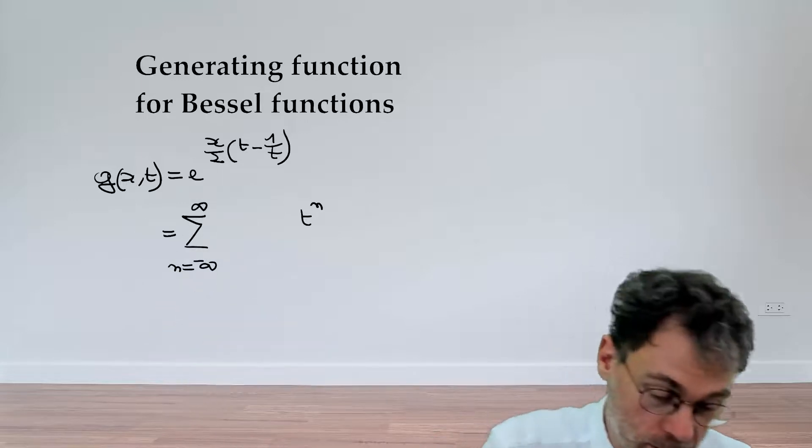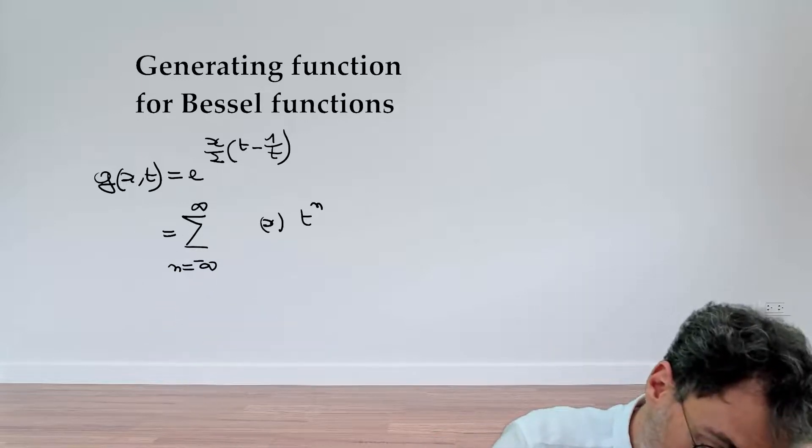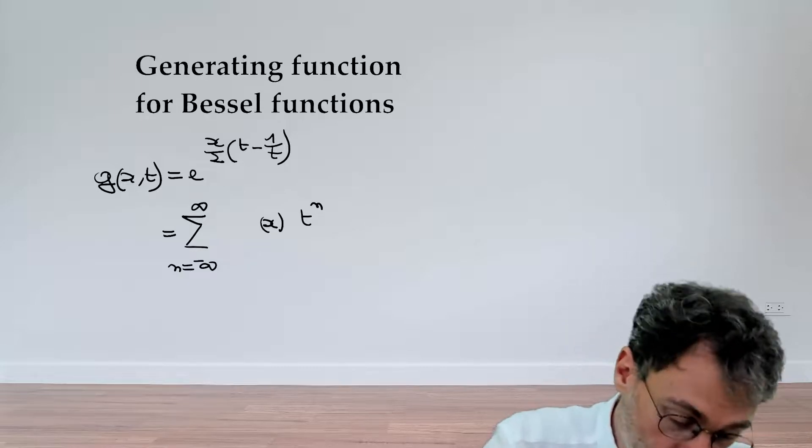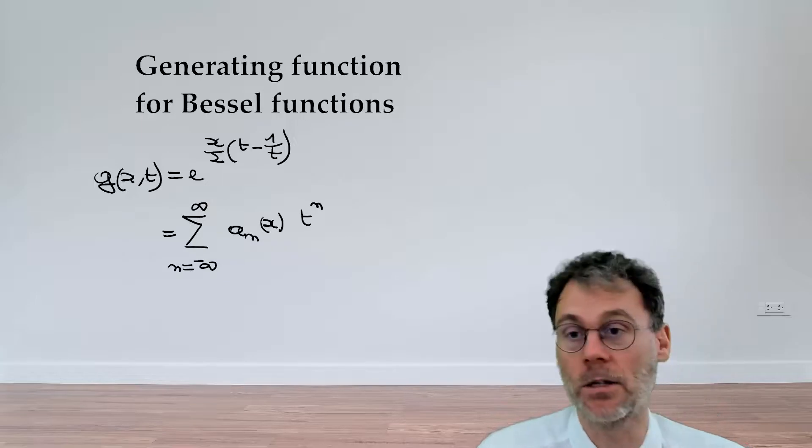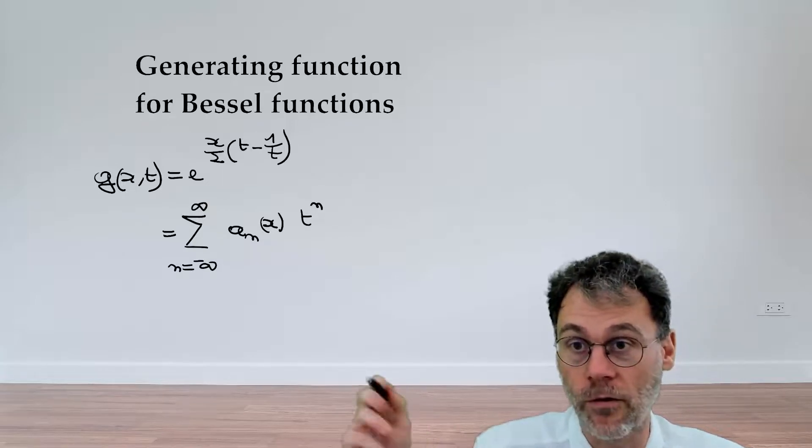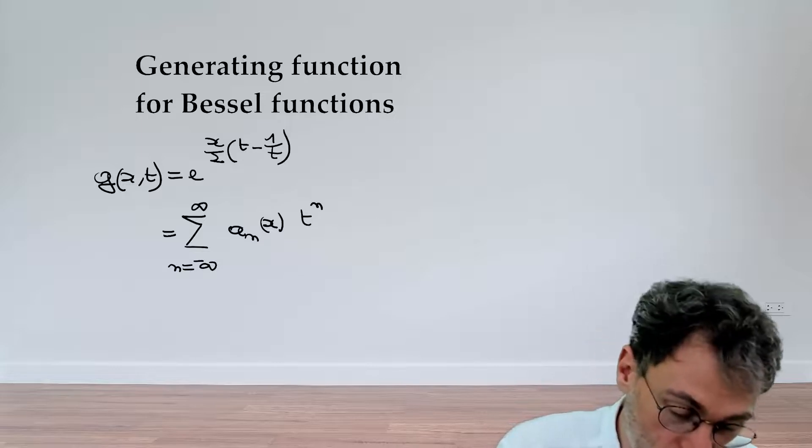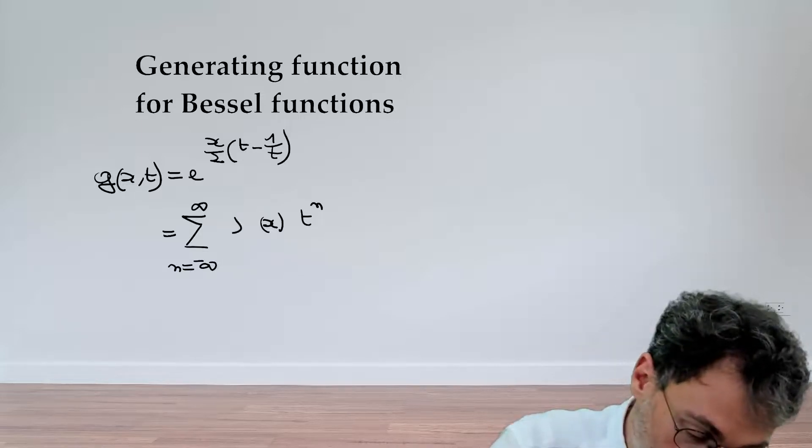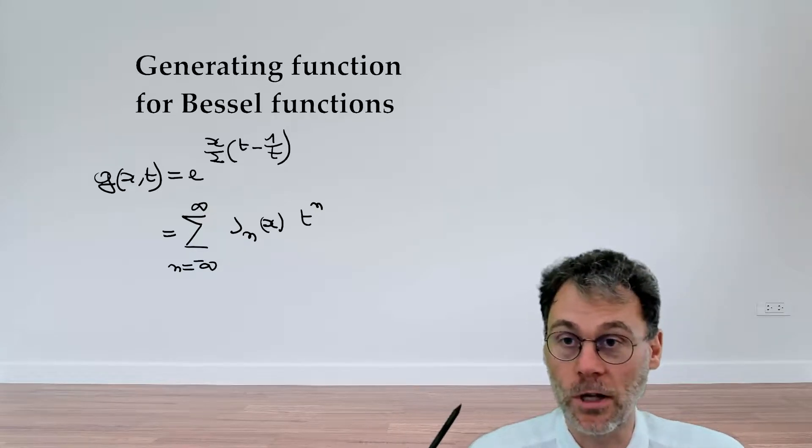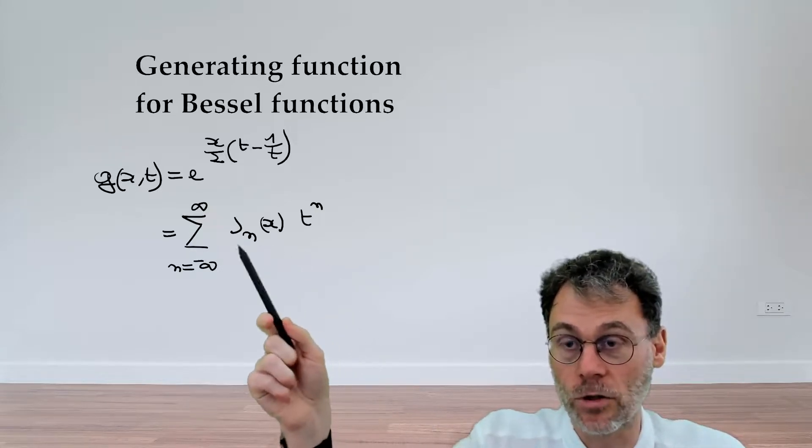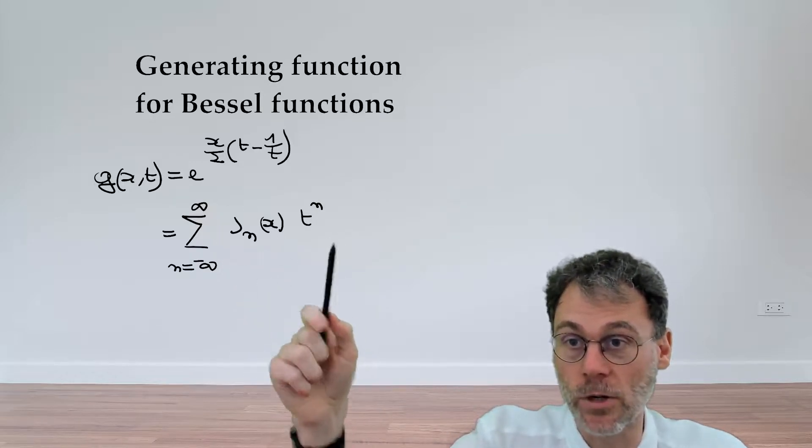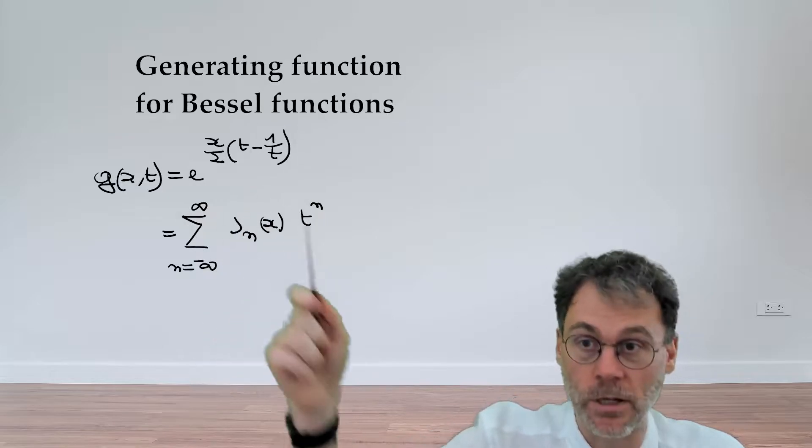We will have a set of expansion coefficients, but since our function also depends on x, these expansion coefficients will actually be a function of x. Rather than calling these expansion coefficients a_n of x, what we're going to do is define these expansion coefficients as our Bessel functions, j_n of x. So here we have an alternative definition for Bessel functions of integer order, namely they are the expansion coefficients in the Laurent series of this particular generating function.